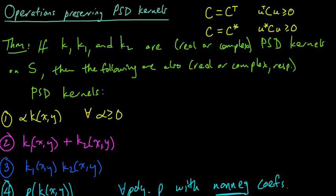In the previous video, we saw this wonderful little theorem giving us all of these nice properties that preserved kernels. And now let's see if we can prove number three, that the product of two positive semi-definite kernels is also a positive semi-definite kernel.